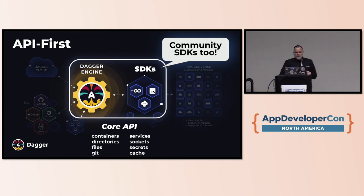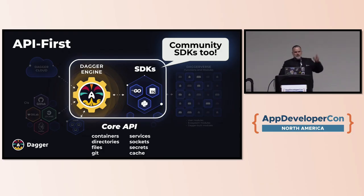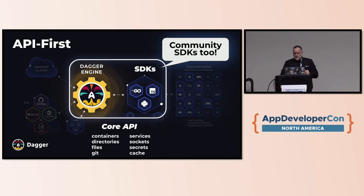When we say API first: you have a Dagger engine and SDKs to access it. There's a core API to reason about containers, directories of source code, pulling from Git, caching dependencies, secrets, and services for integration testing. You use these SDKs in type-safe modern languages like Go, Python, and TypeScript, plus community ones for Rust, Java, Elixir, .NET, C#, and others. Come see us if there's one missing.